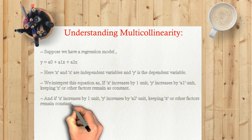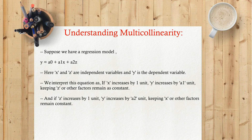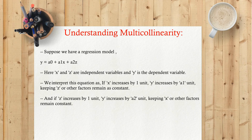Understanding multicollinearity: Suppose we have a regression model Y equals A0 plus A1X plus A2Z. Here X and Z are independent variables. We interpret this equation as: if X increases by 1 unit, Y increases by A1 units, keeping Z and other factors constant.